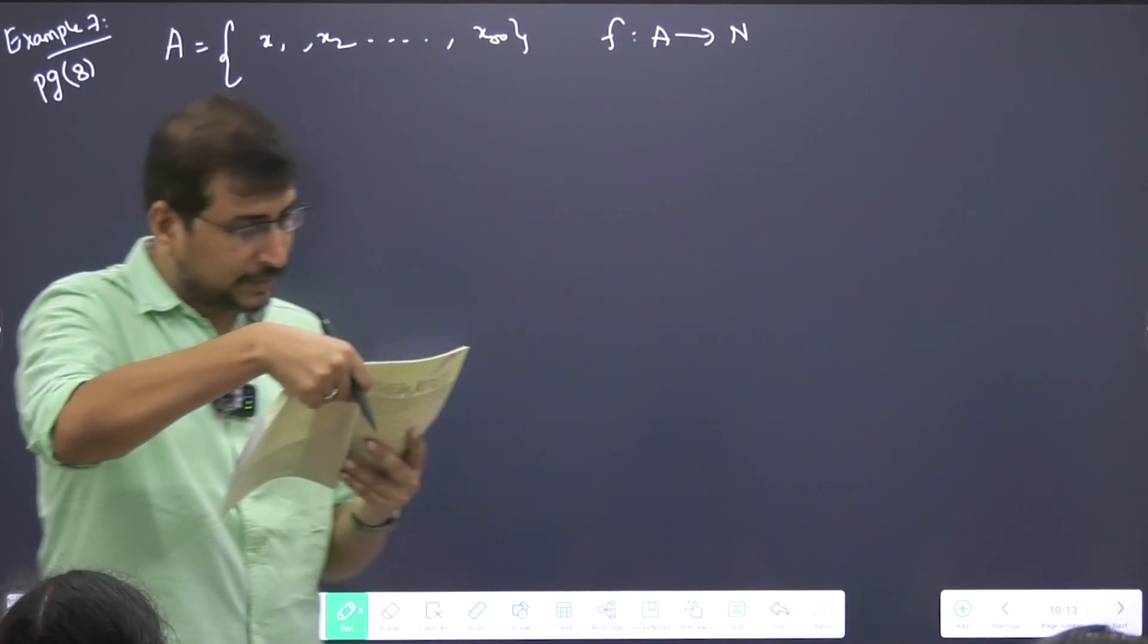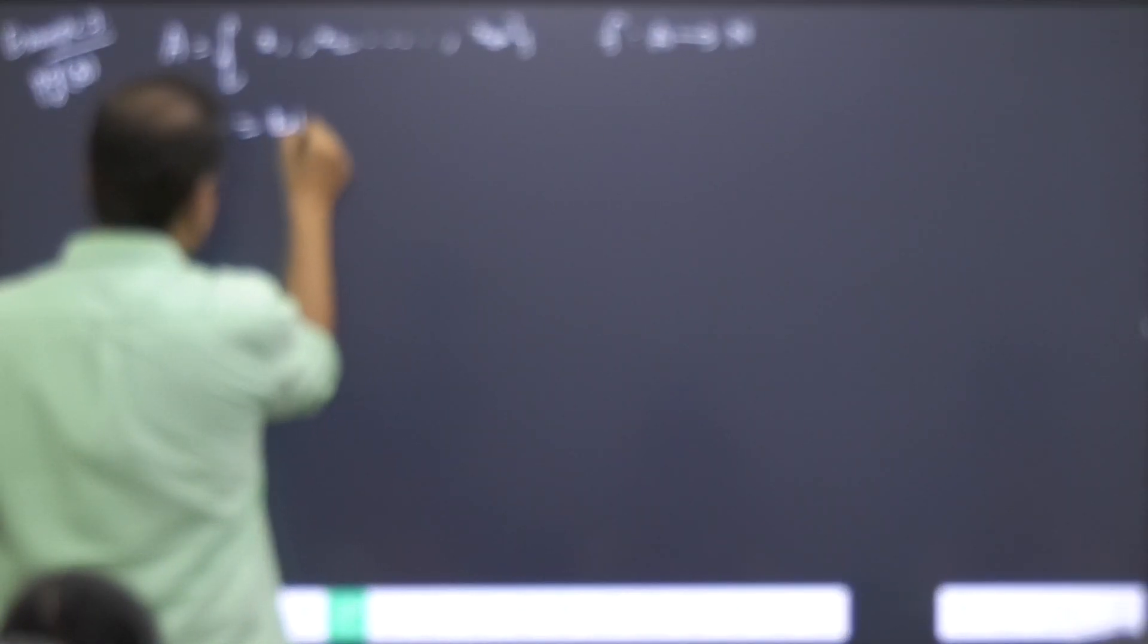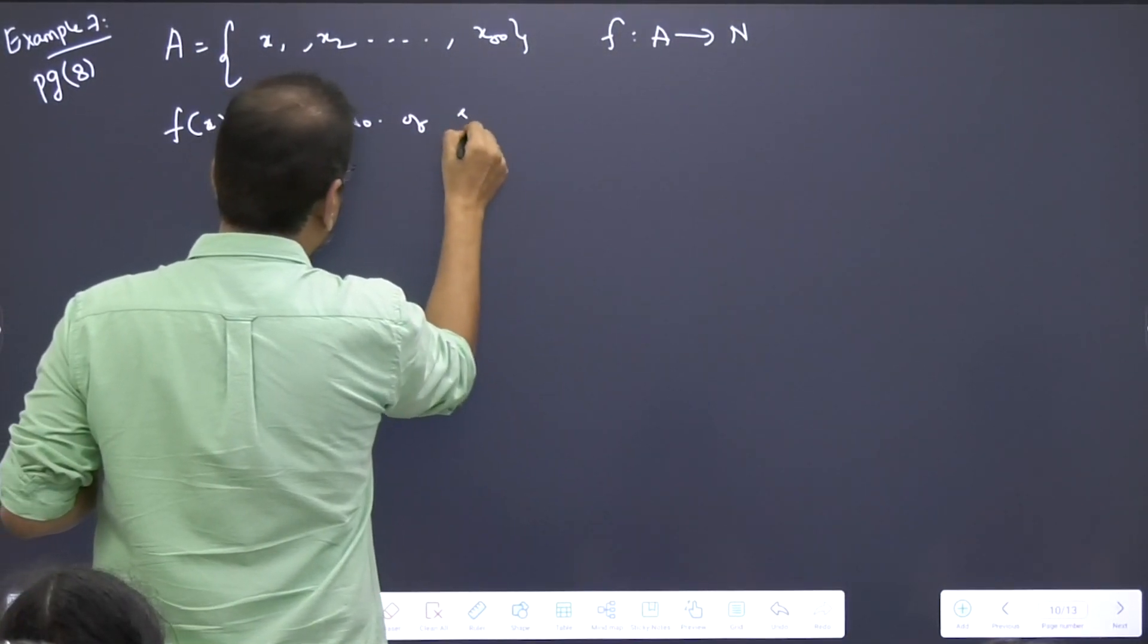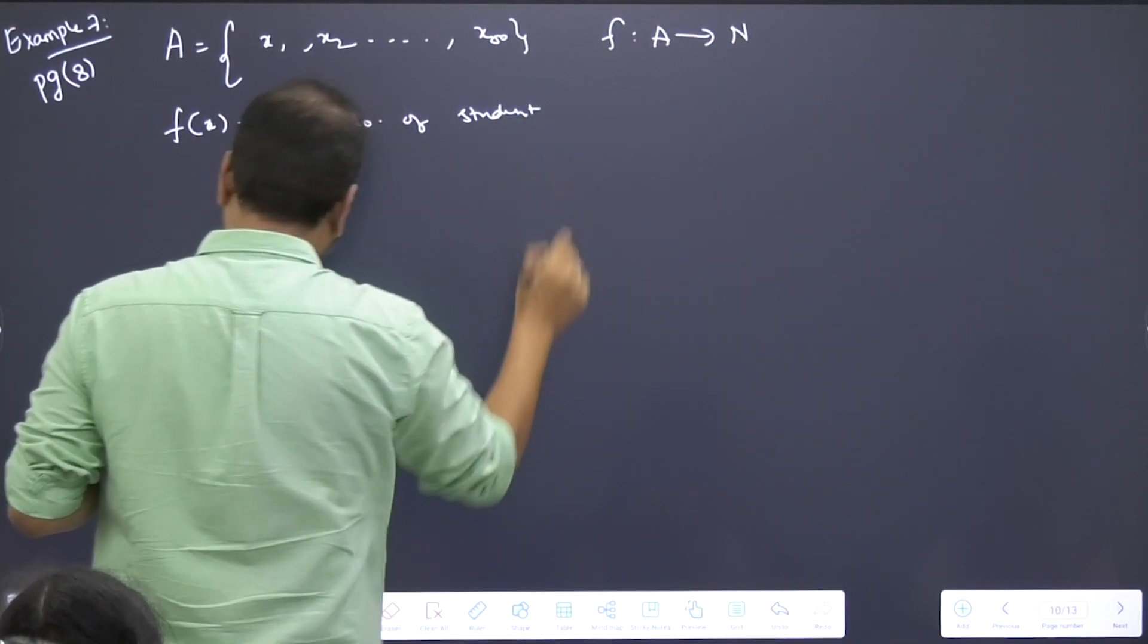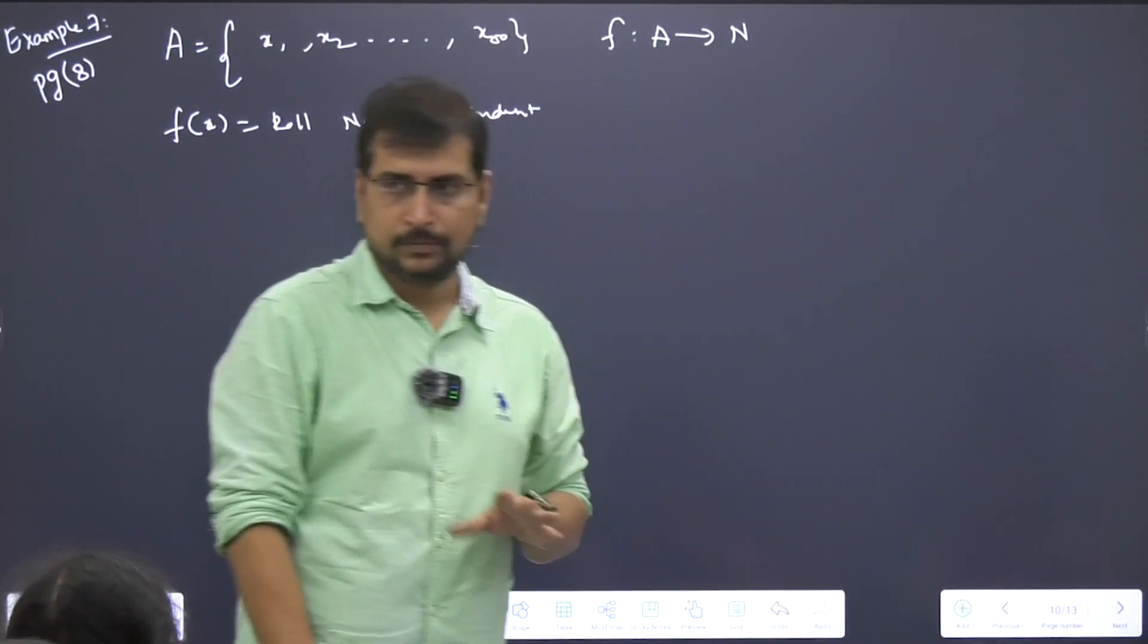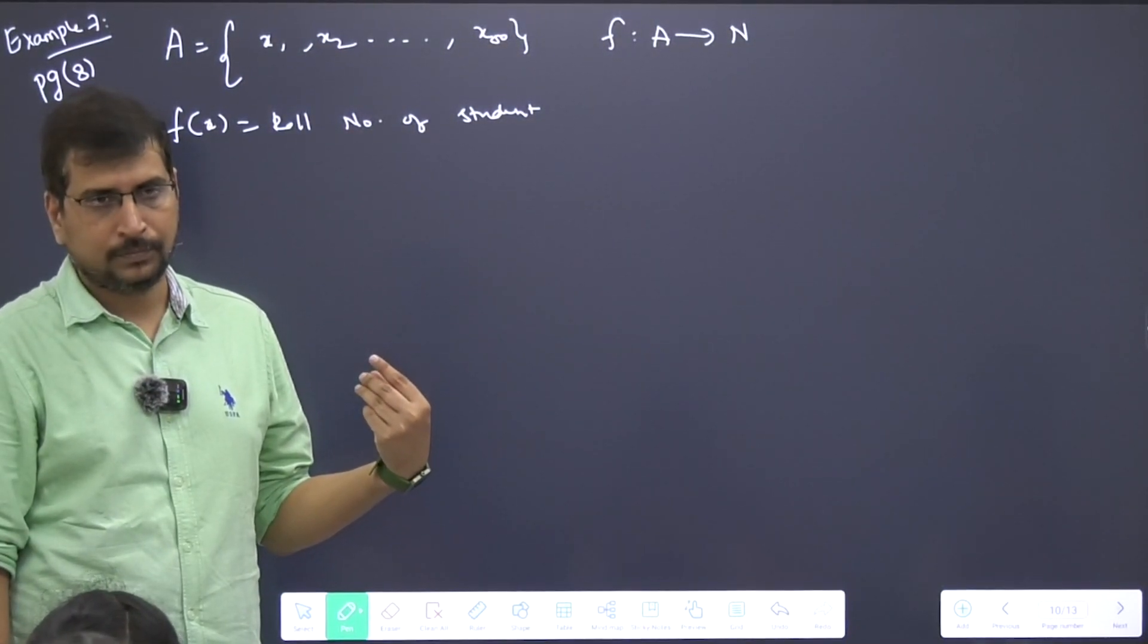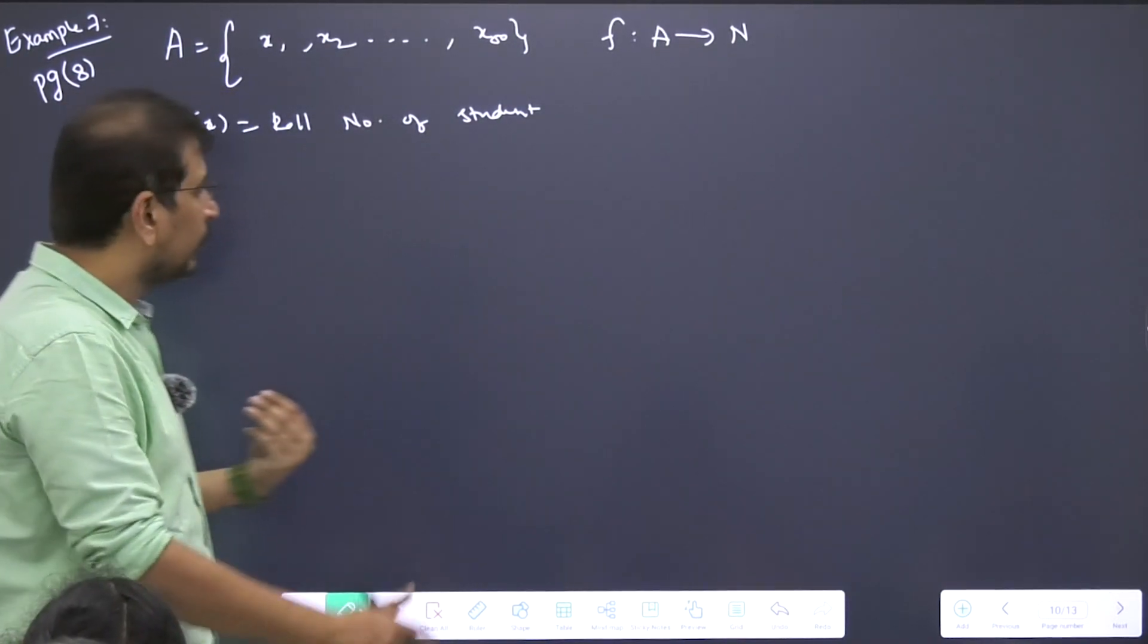Let f be a function defined from A to N, where N is the natural number set, which is defined by f(x) equals roll number of the student. In this case, what are they asking? Show that f is one-to-one but not onto. Let's concentrate only on one-to-one. Tell me, is it a one-to-one function or not?